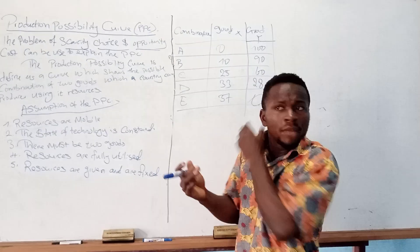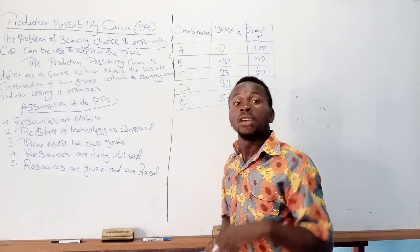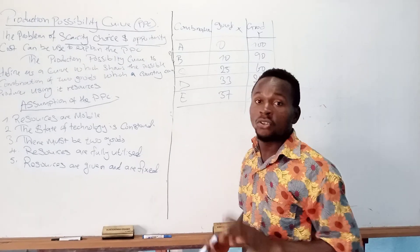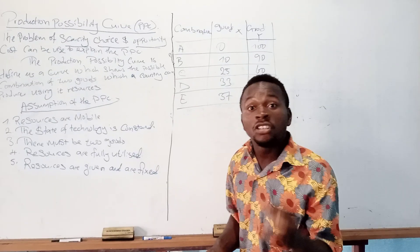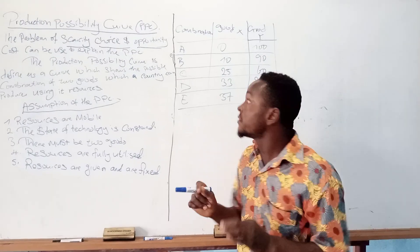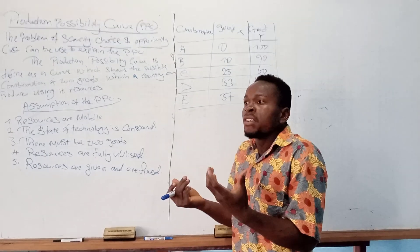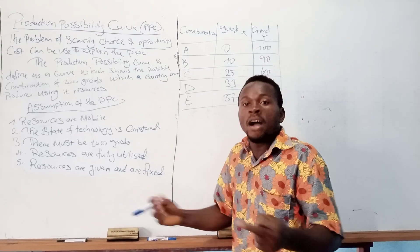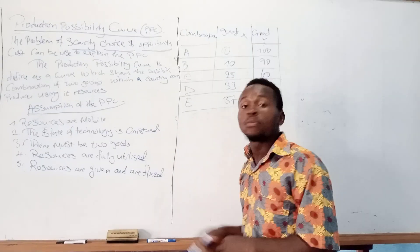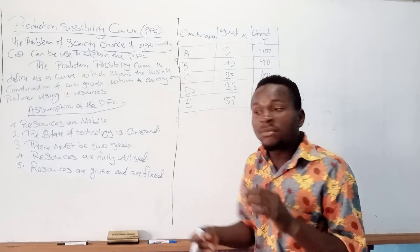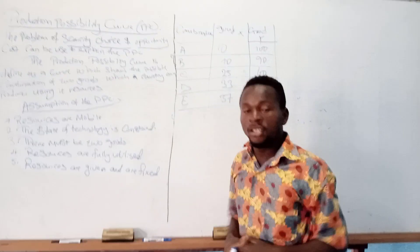They can use other methods of labeling this concept. They can call it a transformation curve — a transformation curve is also known as a production possibility curve. They can also say 'draw an opportunity cost curve' — an opportunity cost curve is also known as a production possibility curve. They can also ask about the production possibility boundary — the production possibility boundary is also the production possibility curve. These are other names they use to test your knowledge.